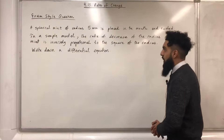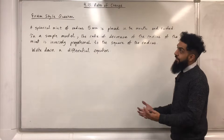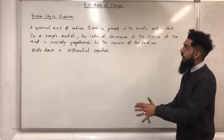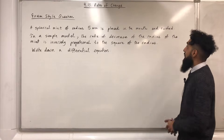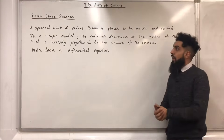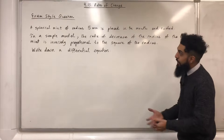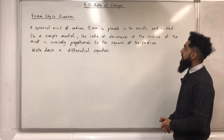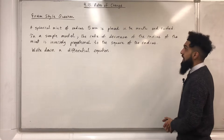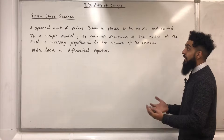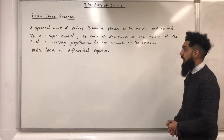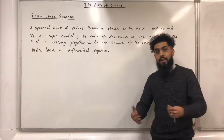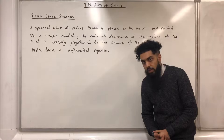Here's an exam-style question. A spherical mint of radius 5 millimeters is placed in the mouth and sucked. In a simple model, the rate of decrease of the radius of the mint is inversely proportional to the square of the radius. Write down a differential equation.